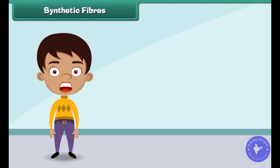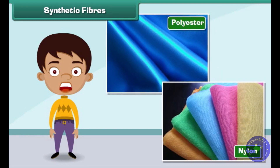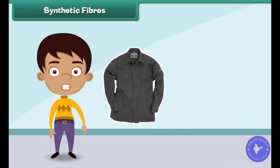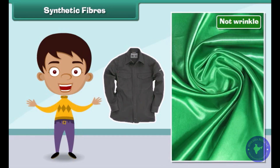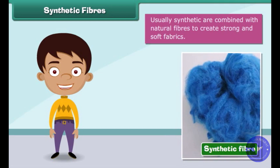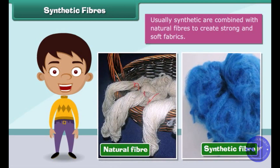Synthetic fibers are man-made. Nylon, polyester, etc. are examples of synthetic fibers. Fabric made from synthetic fibers is cheap, dries easily and does not wrinkle. Usually, synthetic fibers are combined with natural fibers to create strong and soft fabrics.